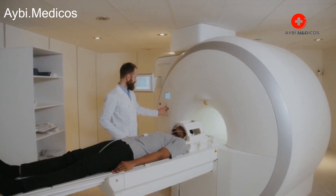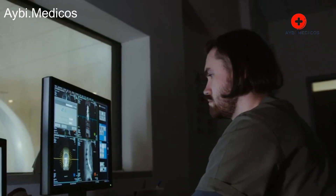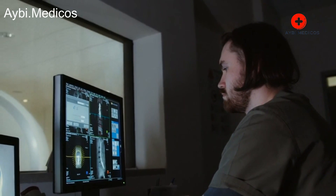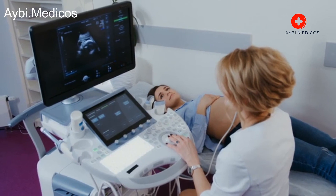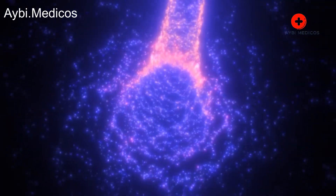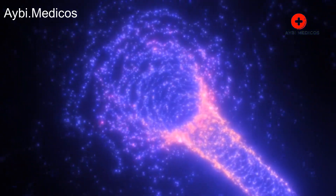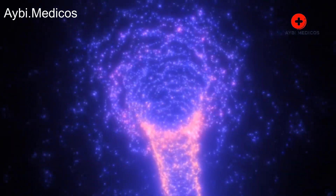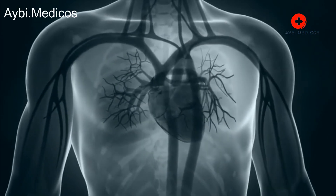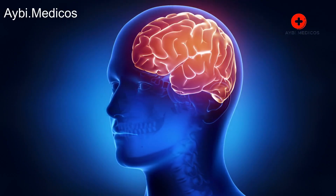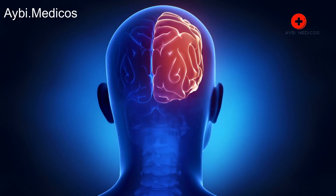Diagnosing a brain tumor involves various imaging tests such as MRI, magnetic resonance imaging, or CT, computed tomography, scans, as well as biopsies if necessary. Treatment options depend on factors such as the tumor type, size, location, and the patient's overall health. Treatment may include surgery, radiation therapy, chemotherapy, targeted therapies, and supportive care to manage symptoms and improve quality of life. Early detection and intervention can play a crucial role in improving outcomes. If you suspect you or someone you know may have a brain tumor based on the symptoms mentioned, it's important to consult a medical professional for proper evaluation and treatment.